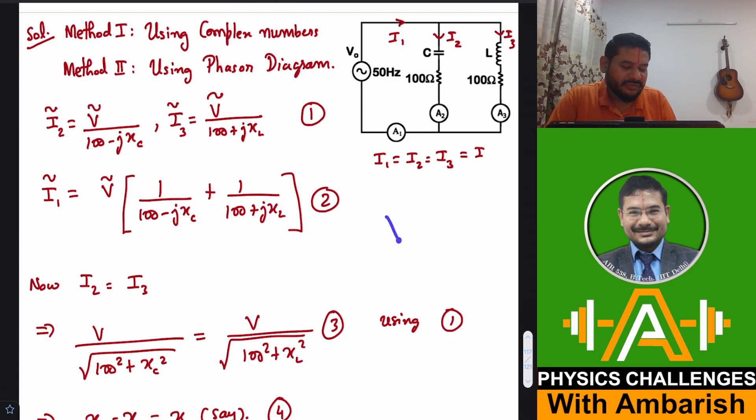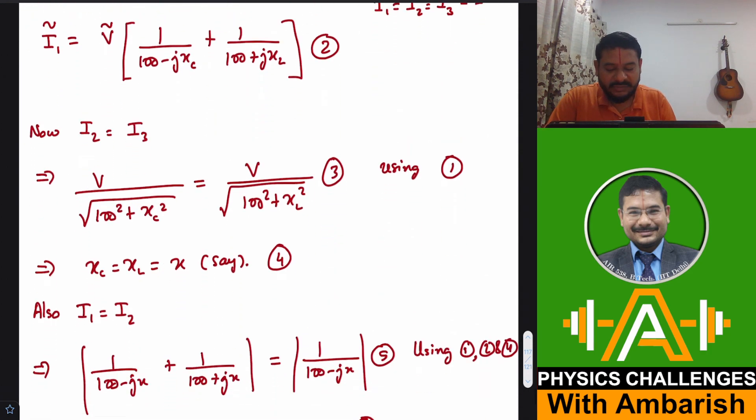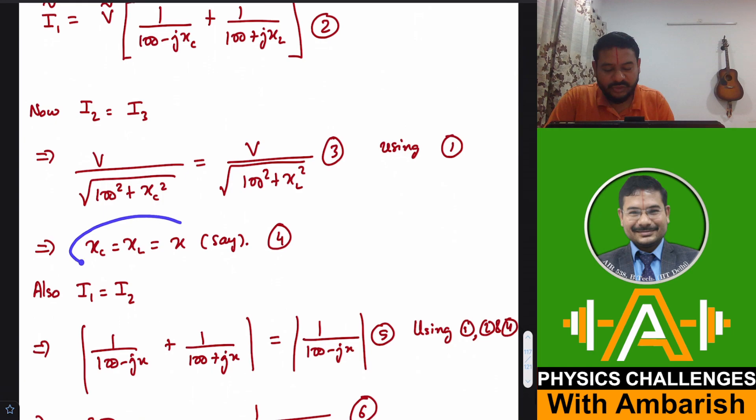So when I write a symbol without tilde, it means just the magnitude. So since I know that I2 is I3, I2 and I3 are equal magnitude wise. So I can say that V upon square root of 100 square plus XC square, that's the magnitude of this, is equal to V upon square root of 100 square plus XL square. And simplifying this, you get the magnitude of both the reactances as equal. So XC is equal to XL. Let us say it is X.